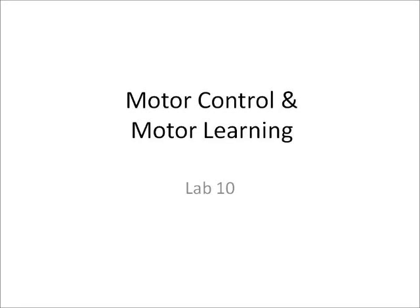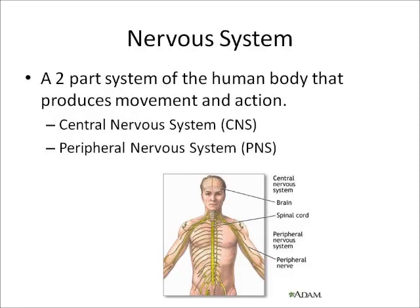Hello everyone. Today we are doing the lecture for motor control and learning, which is lab 10. The nervous system is a two-part system of the human body that produces movement and action. The central nervous system is also known as the CNS, and the peripheral nervous system is the PNS.